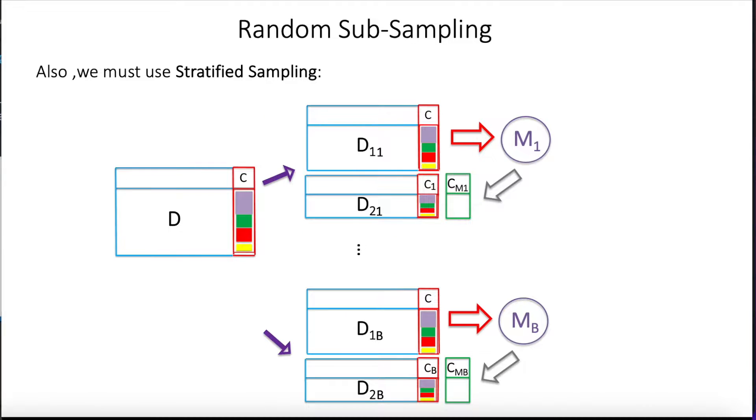Remember, again, we need to make sure we are taking stratified sampling, because if we have an unbalanced set of classes, we want to make sure we keep the proportions and all the classes are present in the testing and in the training scenarios in the different rounds. So remember, always choose stratified sampling, also here in random subsampling.